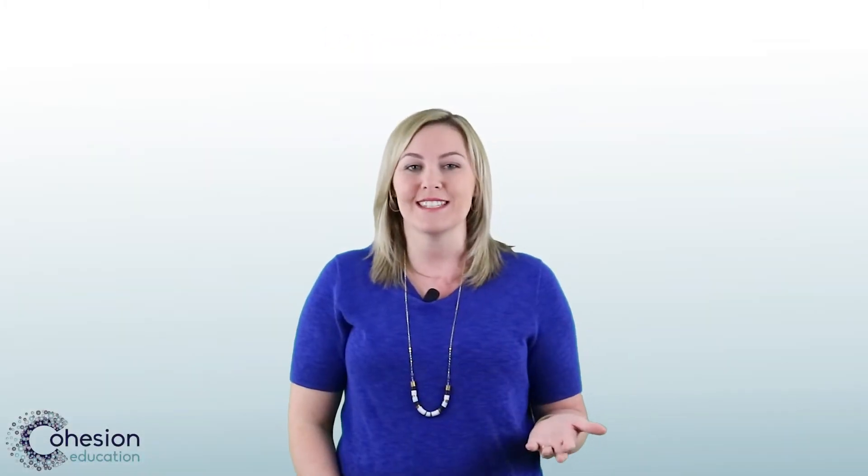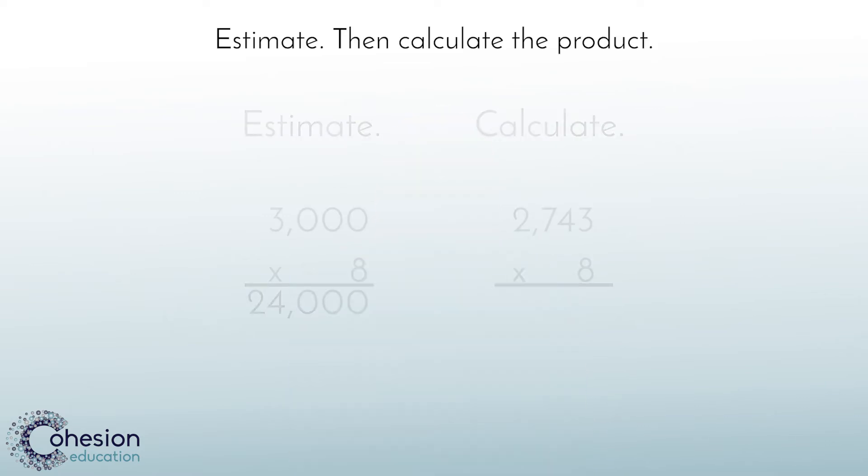Now that we have an estimate for our problem, let's go through the steps to solve to get the actual answer. Anytime we are multiplying by numbers larger than basic facts, we will want to line the numbers up vertically if they are originally in horizontal form, even if the numbers have the same amount of digits.